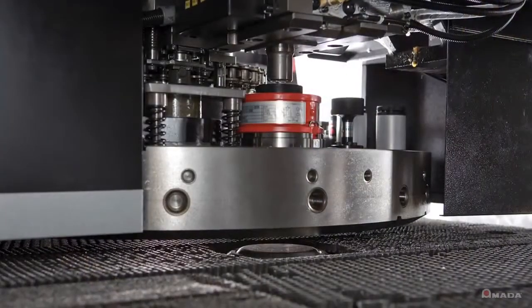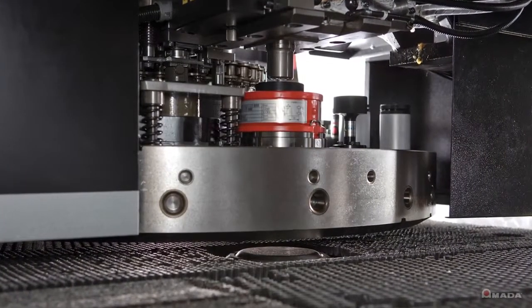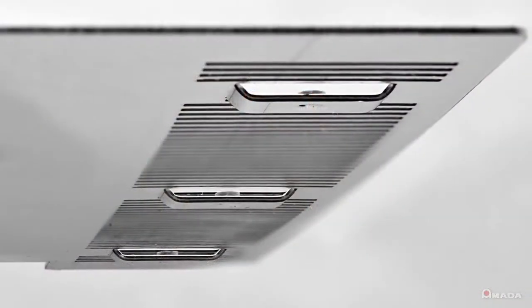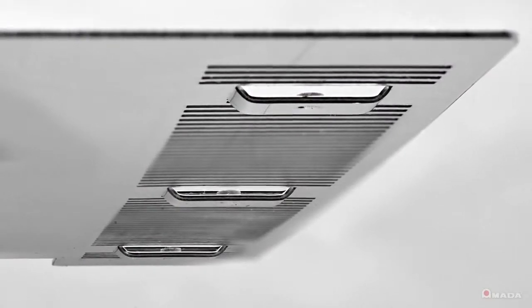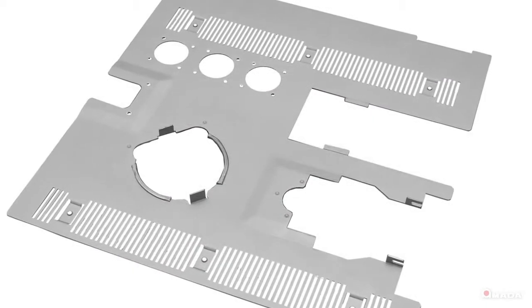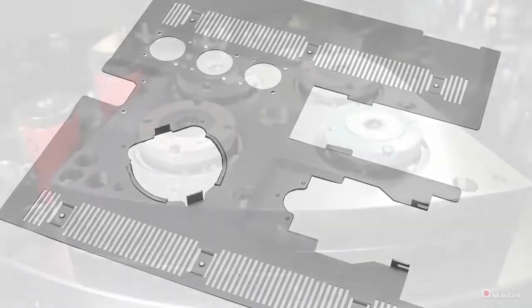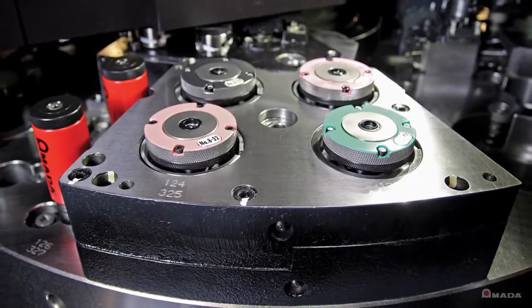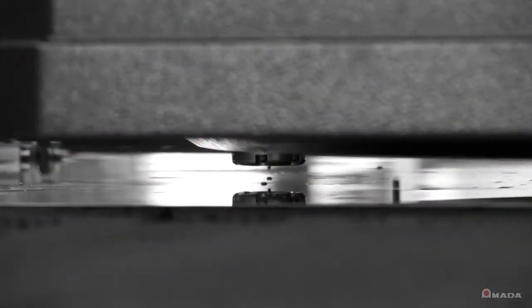The retractable die stations and full brush table allow for down forming of special features such as extrusions and taps, a process that is normally difficult with an ordinary turret configuration. The ZR turret comes with four tapping stations which accept either standard or metric taps.